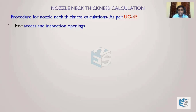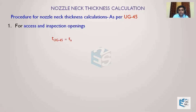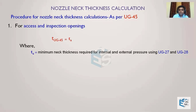That's why these nozzles are given different treatment compared to other types or process nozzles. Whenever we are designing a manway, hand hole, or inspection opening nozzle, the nozzle neck thickness is calculated as T_UG45. The final thickness as per UG45 is called T_UG45. For an inspection or manway opening, T_UG45 is directly equal to T_A. T_A is the minimum required thickness of the nozzle neck cylinder under internal and/or external pressure, as applicable.